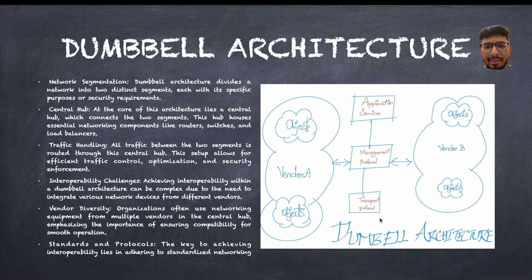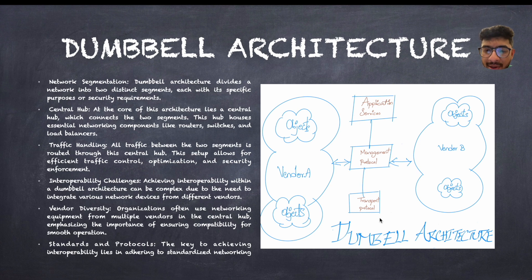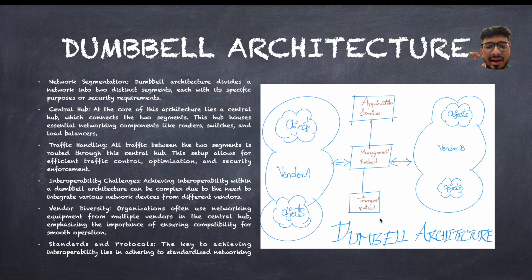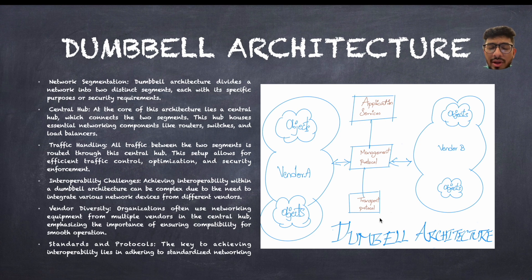Say, for example, you want to send a message. You are using a mobile made by vendor A and you want to send some data to your friend who is using vendor B. What this architecture and interoperability gives you is that all the data should be transferred seamlessly. There should be no redundancies in any kind of data — everything the vendor wants to send has to reach vendor B. That is how it all works in interoperability and this dumbbell architecture.